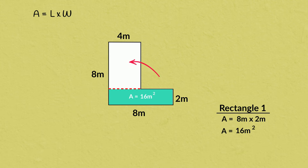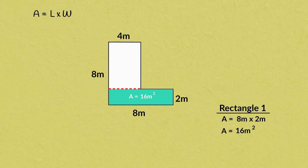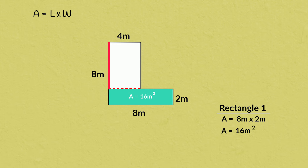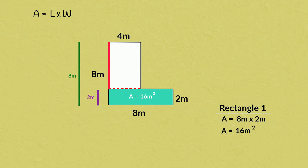Now let's move on to this rectangle. We can see that the width is 4 meters. We have this measurement of 8 meters, but that is the length from here to here. Instead, we need to find this length — from here to here. We can use the other measurements to help. We know the overall length is 8 meters, and we know that this side of the first rectangle is 2 meters. We can subtract 2 meters from 8 meters to find this length: 6 meters.